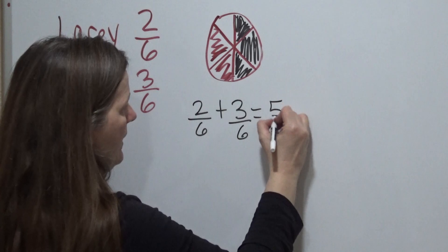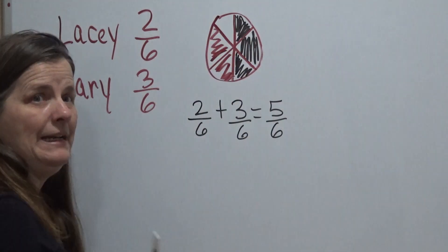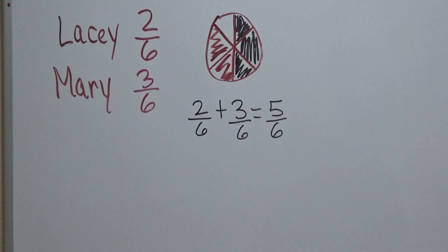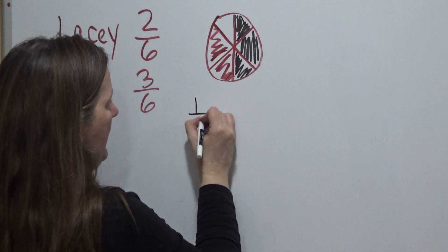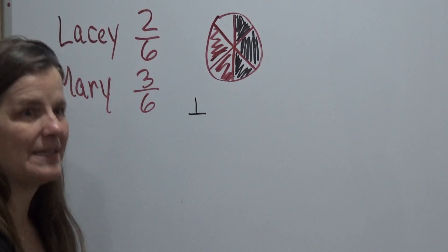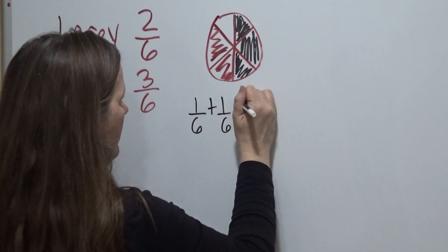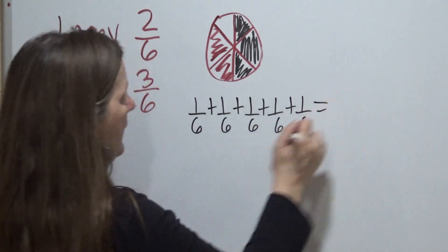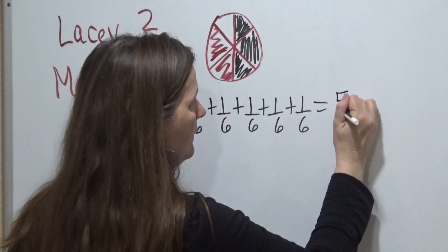When we add that together, we know that 5 out of 6 slices were eaten — 1, 2, 3, 4, 5 slices eaten out of 6 slices of pizza. And when we do the unit fraction for that, Lacey isn't going to eat 2 slices at the same time — she'd eat 1 slice and then another slice. So she would have 1 sixth plus 1 sixth. And then Mary would have 1 sixth plus 1 sixth plus 1 sixth. Just know that 5 out of 6 is the same as 1 sixth counted 5 times.